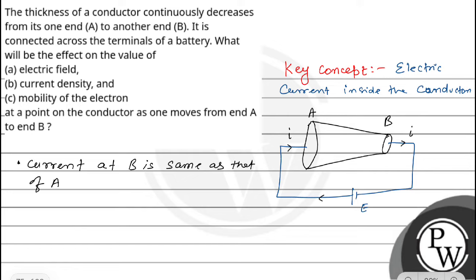Now we will see option A. What will be the effect on the electric field? We know that electric field is equal to sigma into J, that is conductivity into current density J.